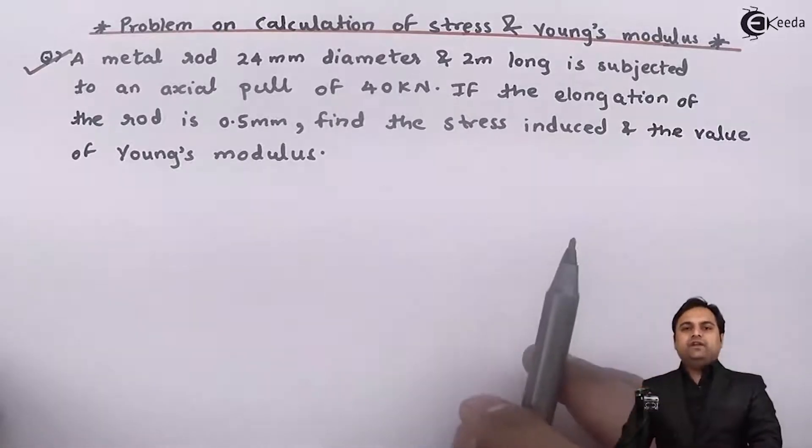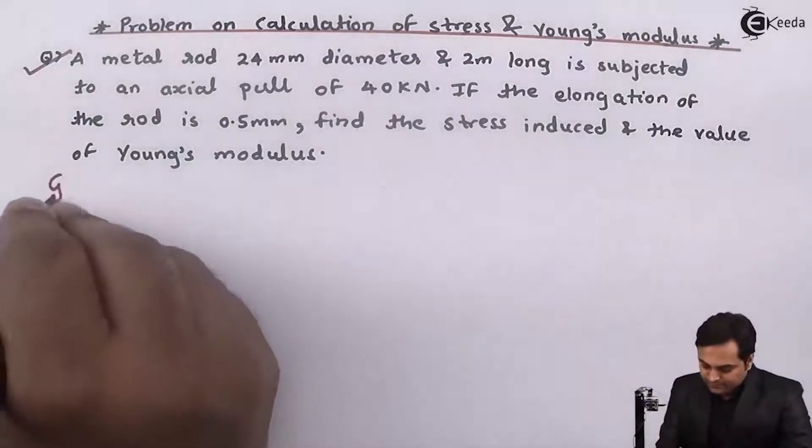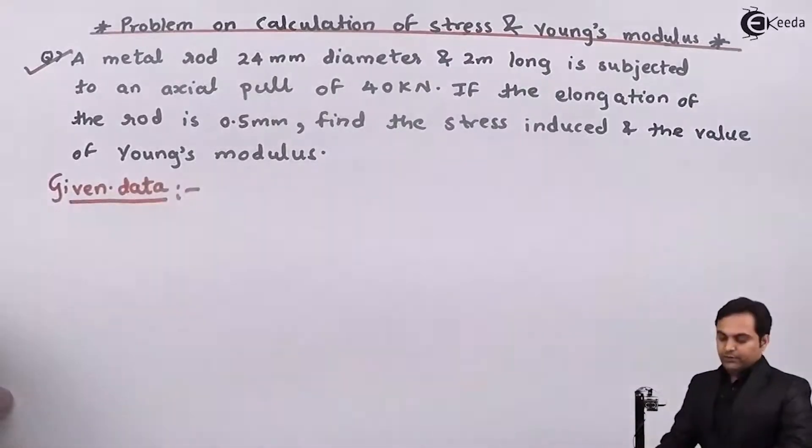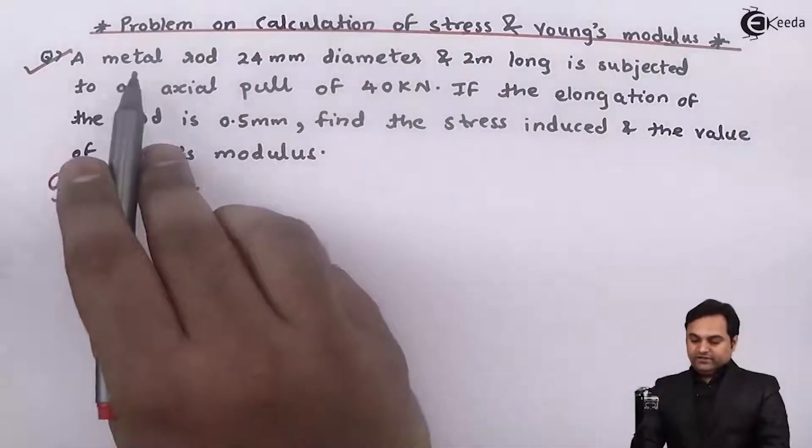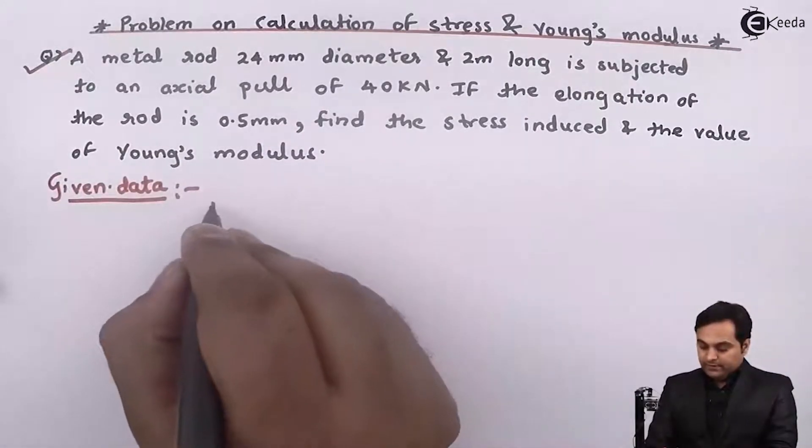So this is the question we have. Whatever is here I will write that in the form of data first. Here it is given there is a metal rod 24 mm in diameter so I will write down d is equal to 24 mm.